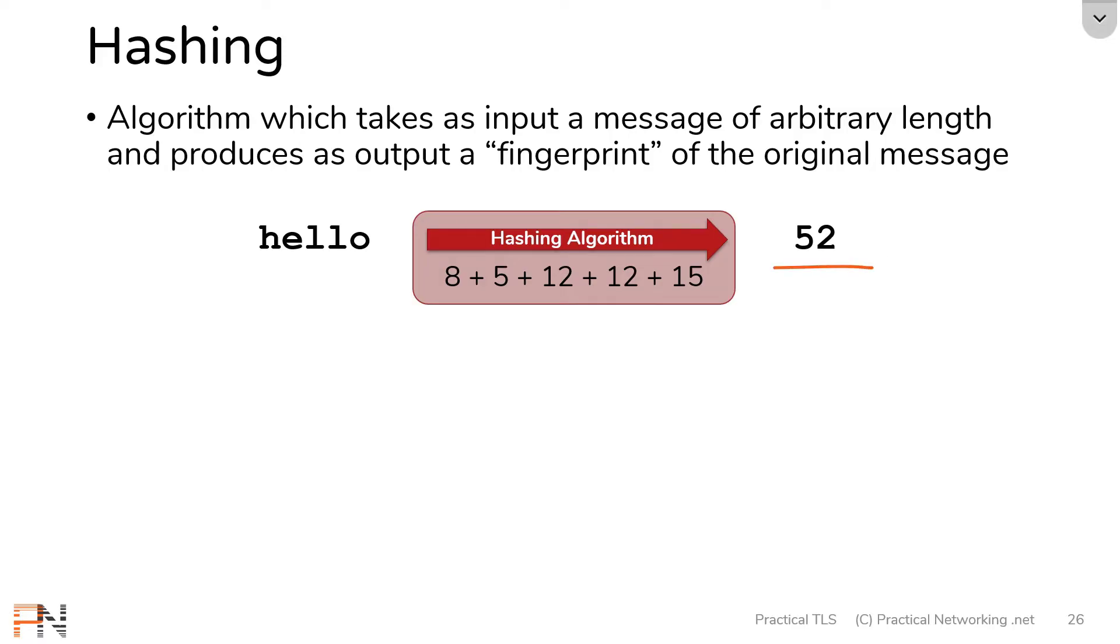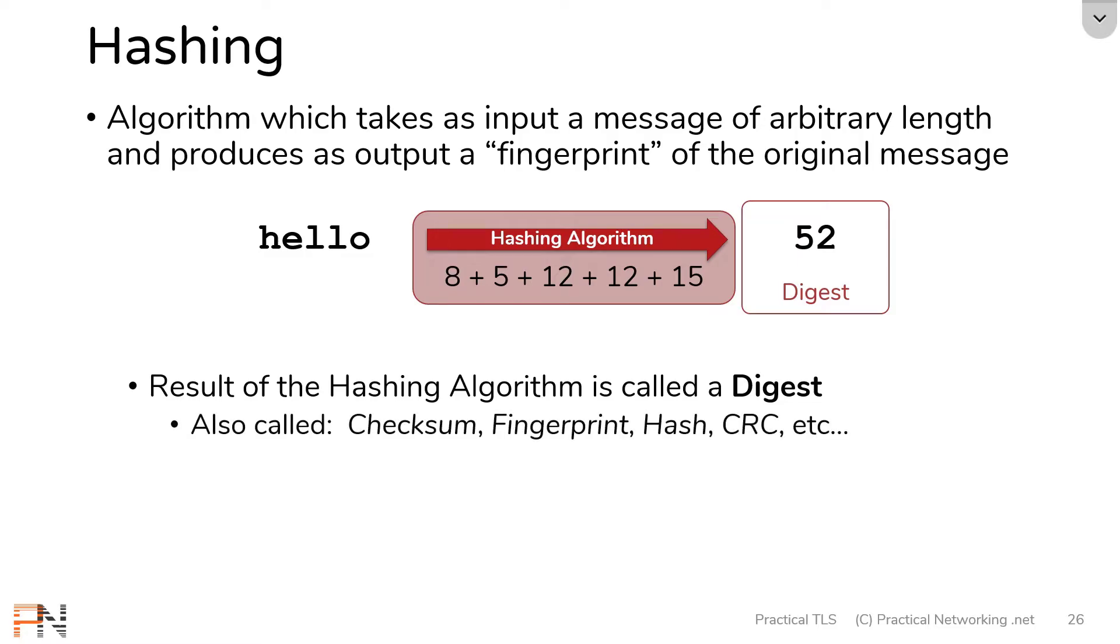Now this 52 over here, the result of a hashing algorithm is referred to as a message digest. It also goes by a few other names, like checksum, fingerprint, hash, or CRC, and there's other names that the industry also calls them. Either way, whatever you put through a hashing algorithm, the result is the message digest.